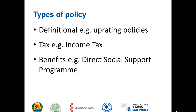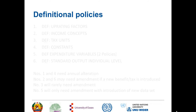I'm going to go through the definitional policies in more detail, and I will flip to the model and talk briefly about each one. There are uprating factors — that's important because the data set is for 2008-09, yet we've got policies for 2015, so data from the data set needs to be uprated in various ways. There are income concepts, defined in income lists, and we'll go through those in more detail.